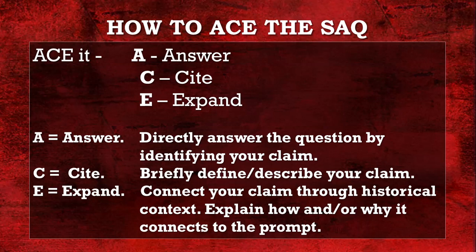So how do you ace the SAQ? Here's potentially the most important part. In your first sentence, answer the prompt — directly answer the question by identifying your claim. C: Cite — briefly define or describe your claim. This is where you bring in your key terms and pieces of SFI. Don't just tell me that the French lived with Native Americans during New France; talk about the Coureurs des Bois, the Runners of the Woods, and how they traded fur — be very descriptive. E: Expand upon it all — this is where you answer 'so what?' In your third sentence, connect your claim to historical context, explaining how and why it connects to the prompt.